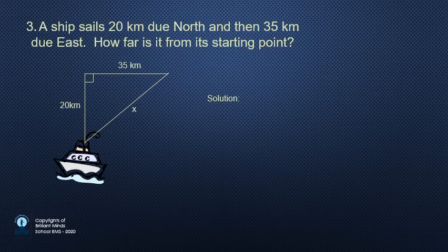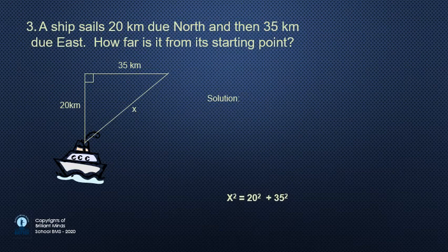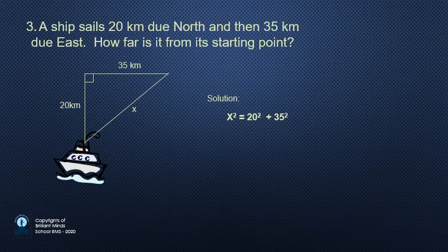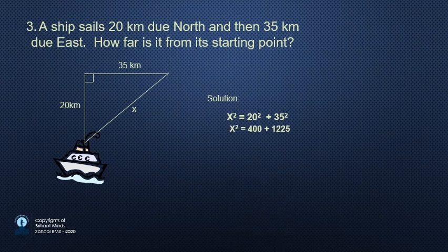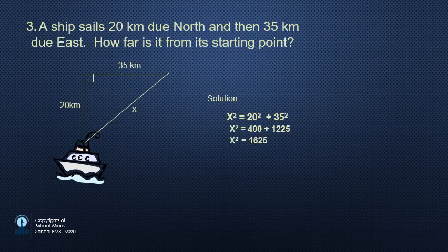The distance between east and how far, the distance far from the starting point represents the diagonal or the hypotenuse of right angled triangle. Then the hypotenuse square, or x square, equals 35 power 2 plus 20 power 2.